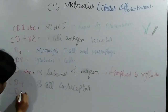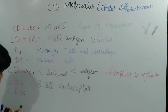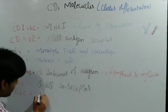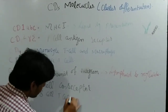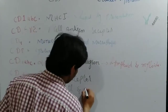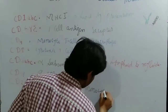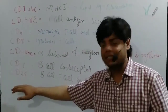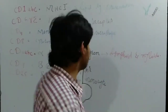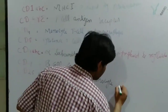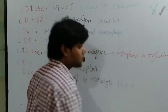Then we have CD25, which is usually present on B cells, T cells, and monocytes. CD25 is actually the interleukin-2 alpha chain molecule.